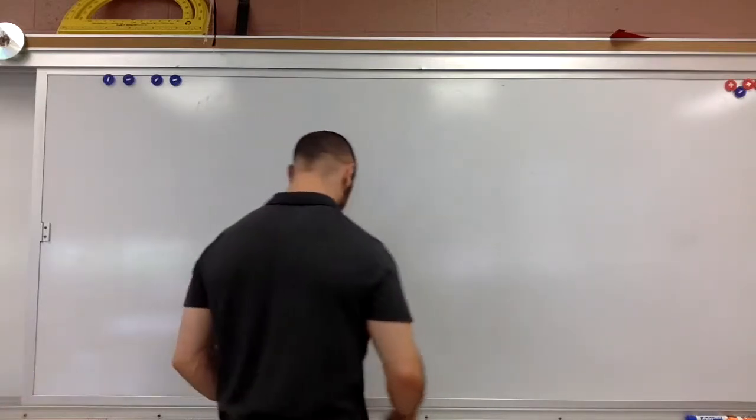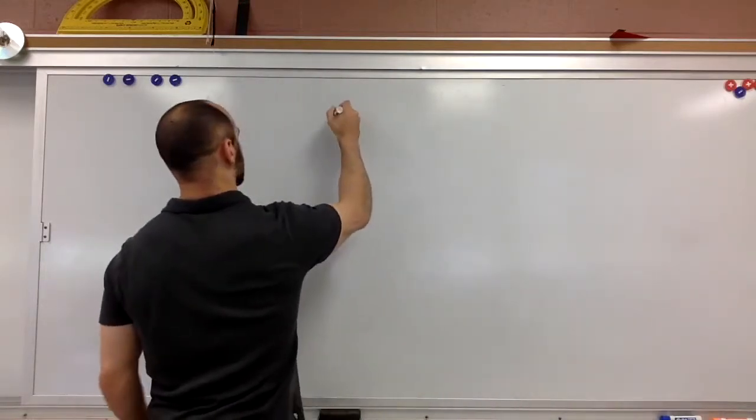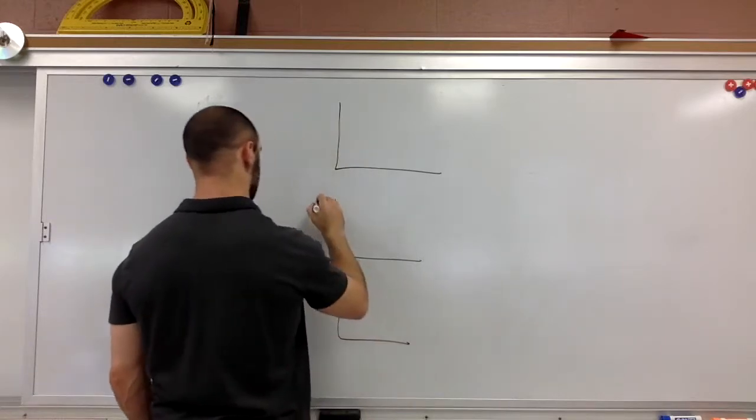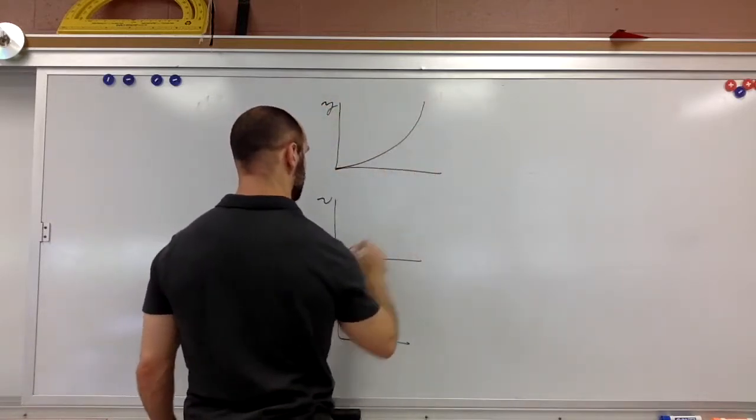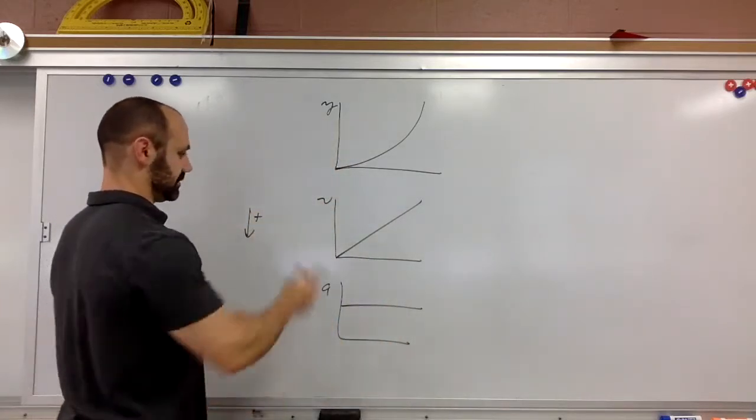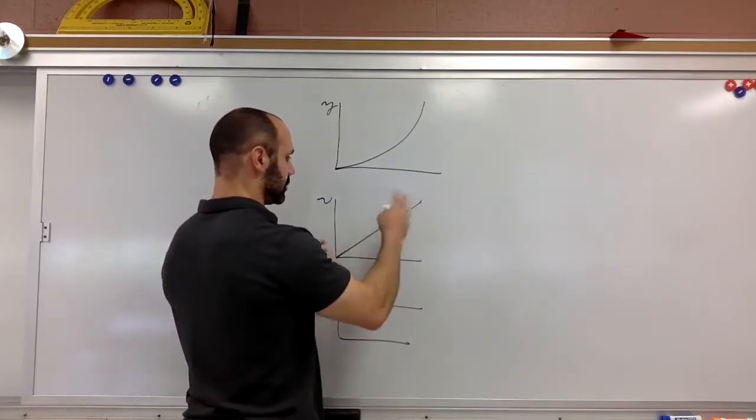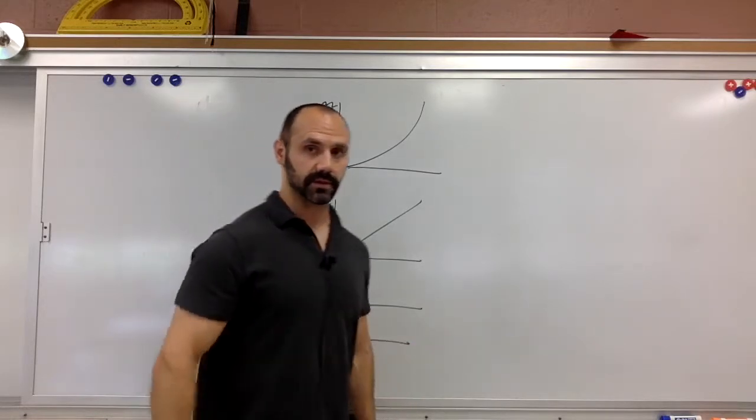So without air resistance, the graphs for position, velocity, and acceleration versus time look like this. If down is positive, that's what we have. Constant acceleration, constantly increasing velocities to a straight line, and a parabolic curve for the position as a function of time.